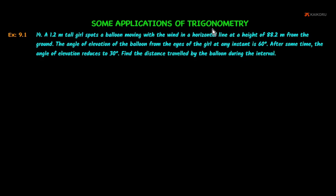Some applications of trigonometry — Exercise 9.1, Problem Number 14. A 1.2 meter tall girl spots a balloon moving with the wind in a horizontal line at a height of 88.2 meters from the ground. The angle of elevation of the balloon from the eyes of the girl at any instant is 60 degrees. After some time, the angle of elevation reduces to 30 degrees. Find the distance traveled by the balloon during the interval.